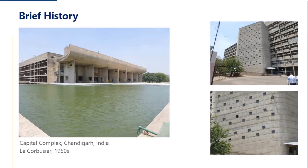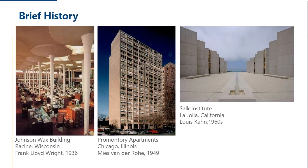Some famous examples include Le Corbusier's Capitol Complex in Chandigarh, India — the Palace of Assembly and the Chief Secretary Office of Punjab — showing quite dramatic uses of concrete, including a flexible facade of shape that would be very difficult to match. More common 20th century examples include the Johnson Wax building in Racine, Wisconsin by Frank Lloyd Wright in 1936, the Promontory Apartments in Chicago by Mies van der Rohe in 1949, and the Salk Institute in La Jolla, California by Louis Kahn in the 1960s.